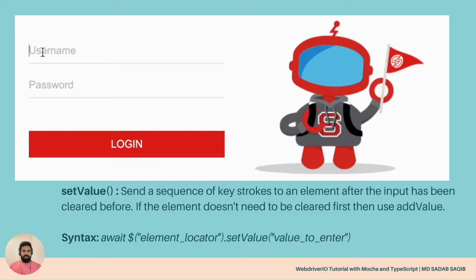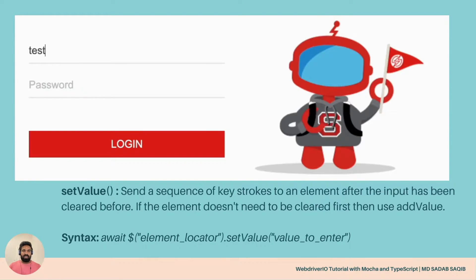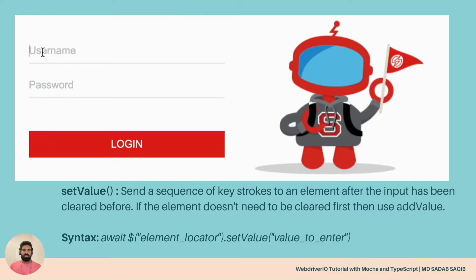First, setValue. What setValue does is send a sequence of keystrokes to an element after the input has been cleared. That means if any data is already present in the text box, it clears that data first and then enters the new fresh data you want to enter. The syntax is: await $('your locator').setValue('value').